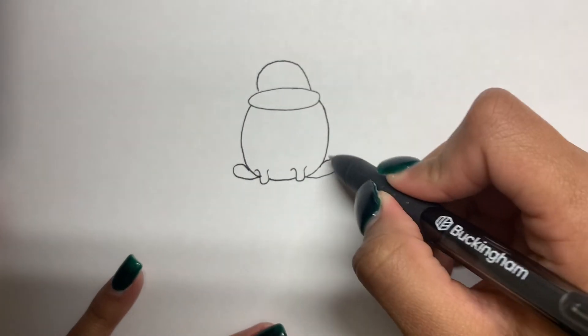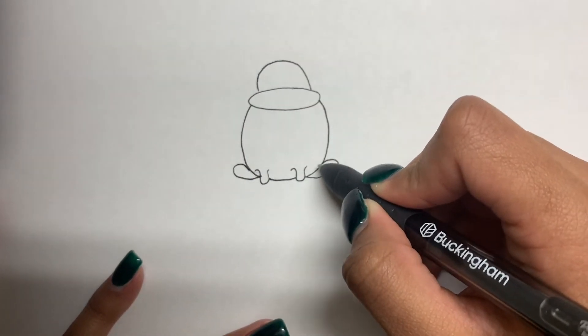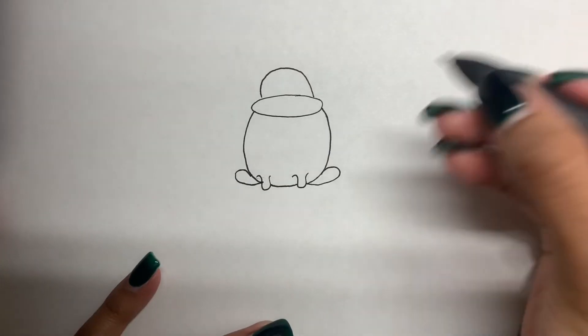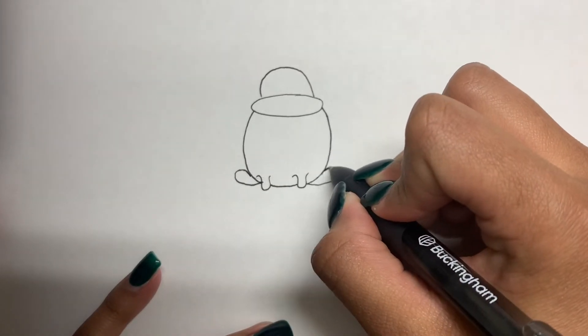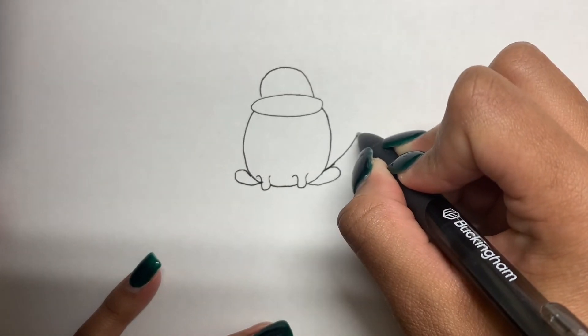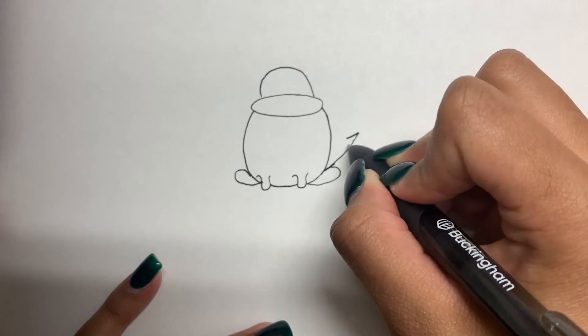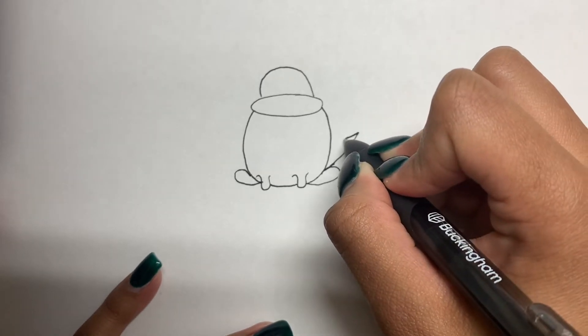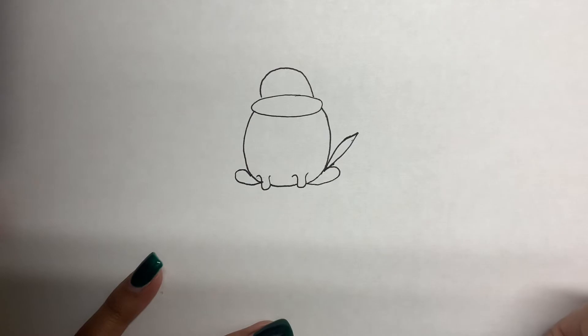Now we're going to go ahead and draw the tail. So right in this little crevice that we just drew where the body meets the hind leg, we're going to go ahead and draw a line straight up. Kind of point it, creating this little angle. And then kind of curving and coming back down to that same spot.